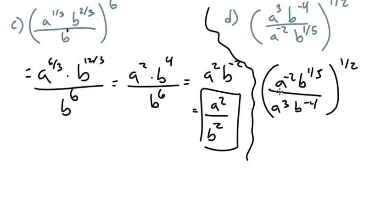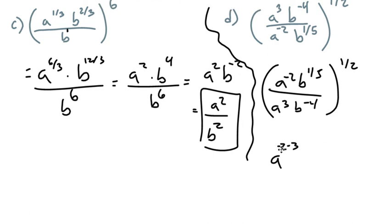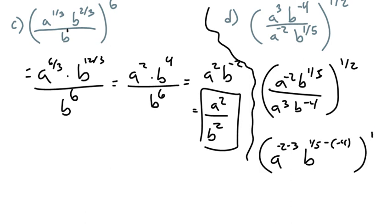Let's simplify this now. We have a to the negative two and a to the three in the numerator. So don't we just subtract these? That's a to the negative two minus three. And right here for the b, we're going to subtract the exponents: it's one fifth minus a negative four — that'll get some people, but not you. And that's all raised to the power of one half. So notice what I'm doing right now — I'm just simplifying what's inside the parentheses.